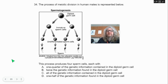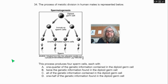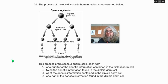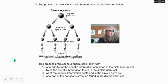Question 34. The process of meiotic division in human males is represented below. This process produces four sperm cells, each with — A, one quarter of the genetic information contained in the diploid germ cell; B, twice the genetic information found in the diploid germ cell; C, all of the genetic information contained in the diploid germ cell; or D, one half of the genetic information found in the diploid germ cell. And that's it, folks — that's the test, 34 questions. How did you think you did? Remember, you can only go back twice to make any corrections. Best of luck to you.